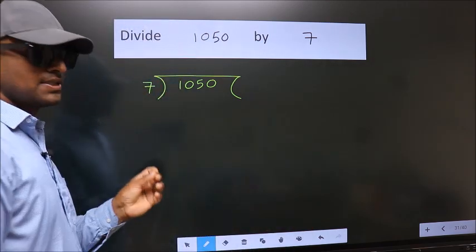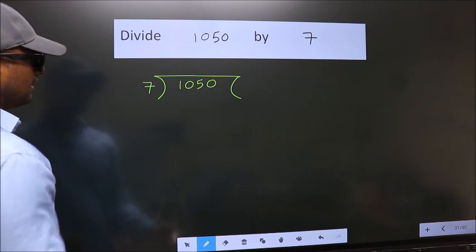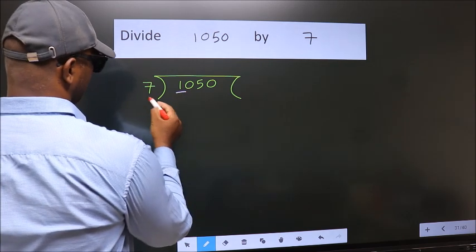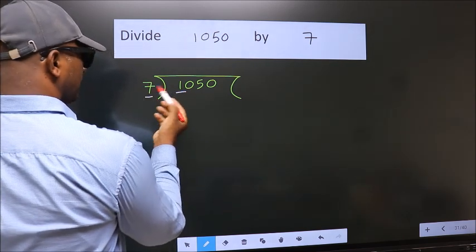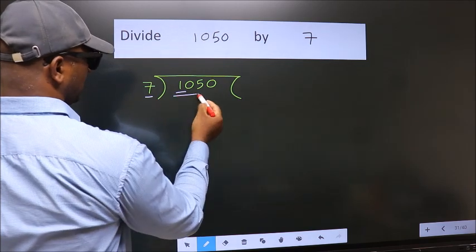This is your step 1. Next. Here we have 1, here 7. 1 is smaller than 7. So we should take 2 numbers, 10.